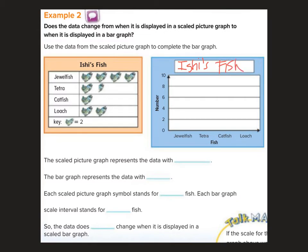Ishi's fish. For jewelfish, again, we have two for each fish. So we have eight fish for the jewelfish. So there's up to eight. And then the tetra, we have three. So that's going to be halfway between two and four. Tetra, catfish is two, catfish, and loach is four. So yeah, I mean, look at this. We've got the same exact data, right? Nothing changes.